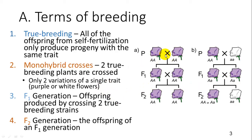Mendel took two true breeding individuals and did a monohybrid cross. He took a true breeding purple flower and a true breeding white flower, and all of their progeny were purple. Then he self-fertilized those and found that some were purple and some were white. The original parents are called the parental types. The all-purple offspring are the F1 or first filial generation, and self-fertilization of those produces the F2 or second filial generation.